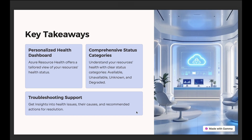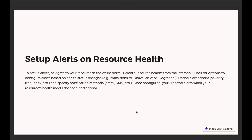Key takeaways: We get a personalized health dashboard where we can see if our resource is available or not. Most users check this section whenever they face an issue or have an outage. We get comprehensive status categories — Available, Unavailable, Unknown, and Degraded — and by checking these we can troubleshoot further and decide what actions to take or contact Microsoft for clarification. Next, we'll see how to set up alerts on resource health.